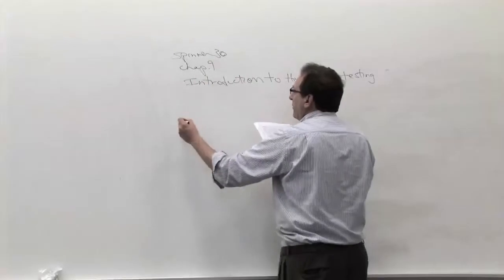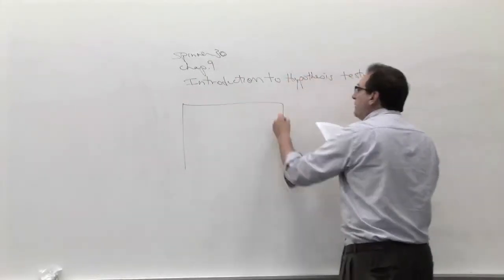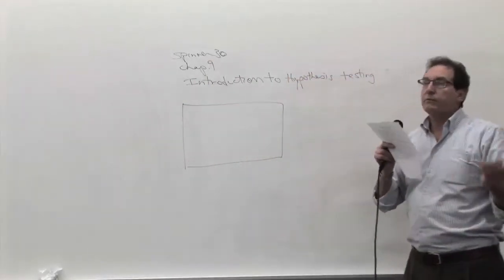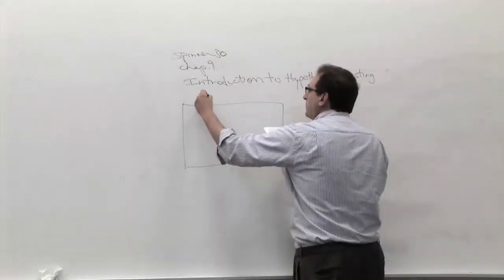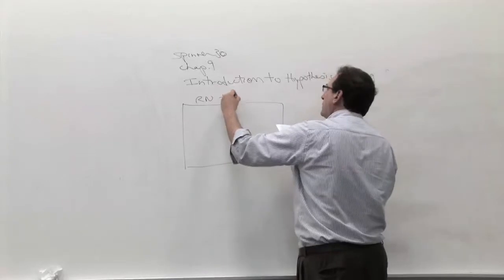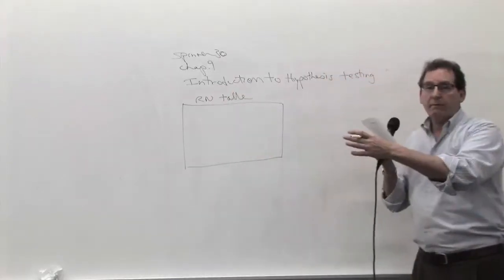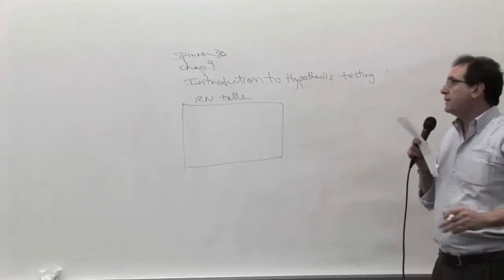Here's the problem that we have. We have in the back of the book, and hopefully by now a lot of you have seen it, and it's part of whatever steps we've gone through, we have a random number table.